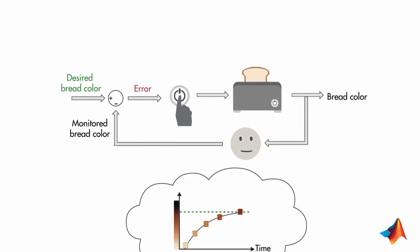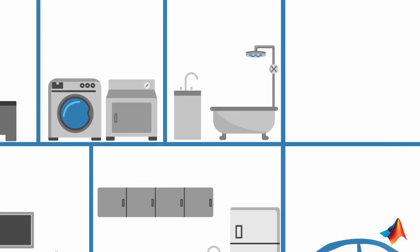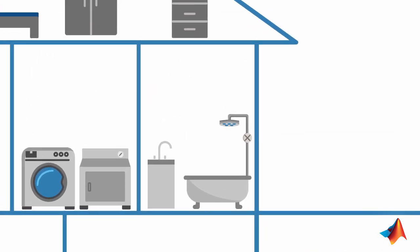Next, we will switch rooms to see another example of feedback control and how it compensates for unexpected events.